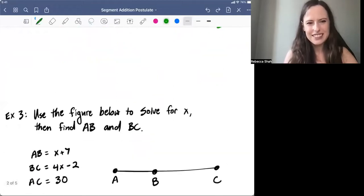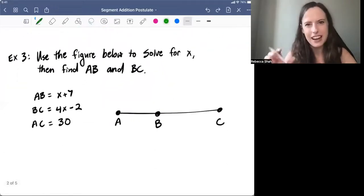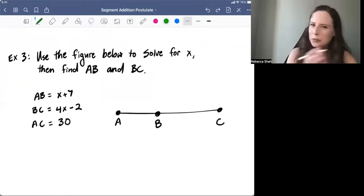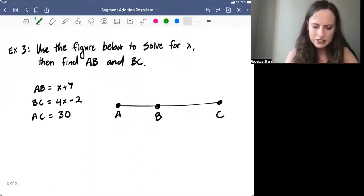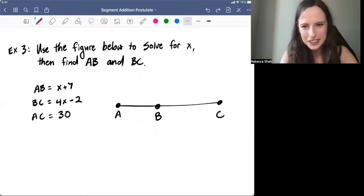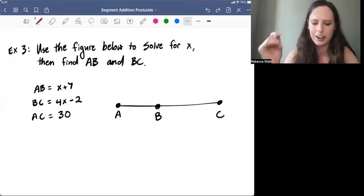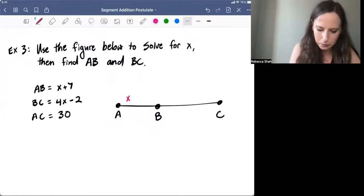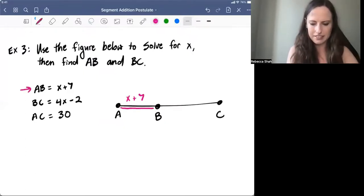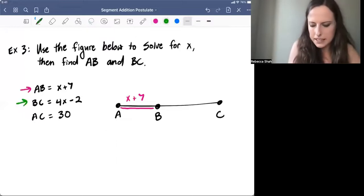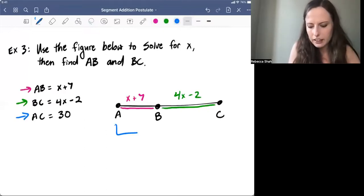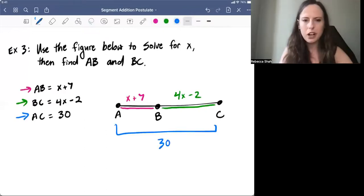That brings us to our next example, where setting up an algebra equation is really the only way we can solve this problem. So let's just start by looking at what we were given in the problem and labeling our diagram. Always a good approach in geometry. So we have our first segment, AB, that is X plus seven. We have our next segment, BC, which is 4X minus two. And then it's telling us that the whole thing is 30.